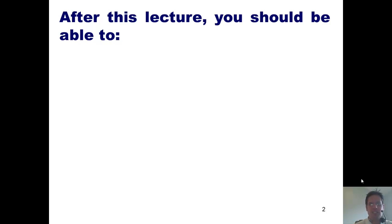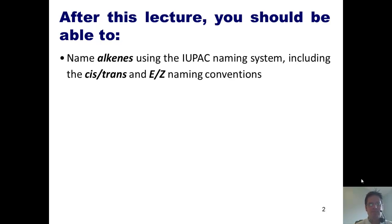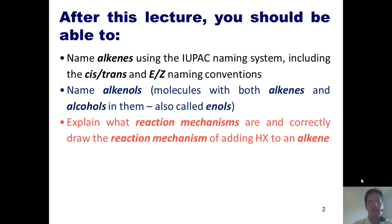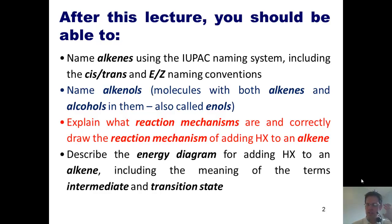After today's lecture, you guys should be able to do each of the following things: Name alkenes using the IUPAC naming system, including the cis-trans and EZ naming conventions. Name alkenols, molecules that have both alkenes and alcohols in them and are also called enols. Explain what reaction mechanisms are and correctly draw the reaction mechanism of adding HX to an alkene. Describe the energy diagram for adding HX to an alkene, including the meaning of the terms intermediate and transition state. And lastly, identify a compound's degree of unsaturation. With that said, let's go ahead and get started.